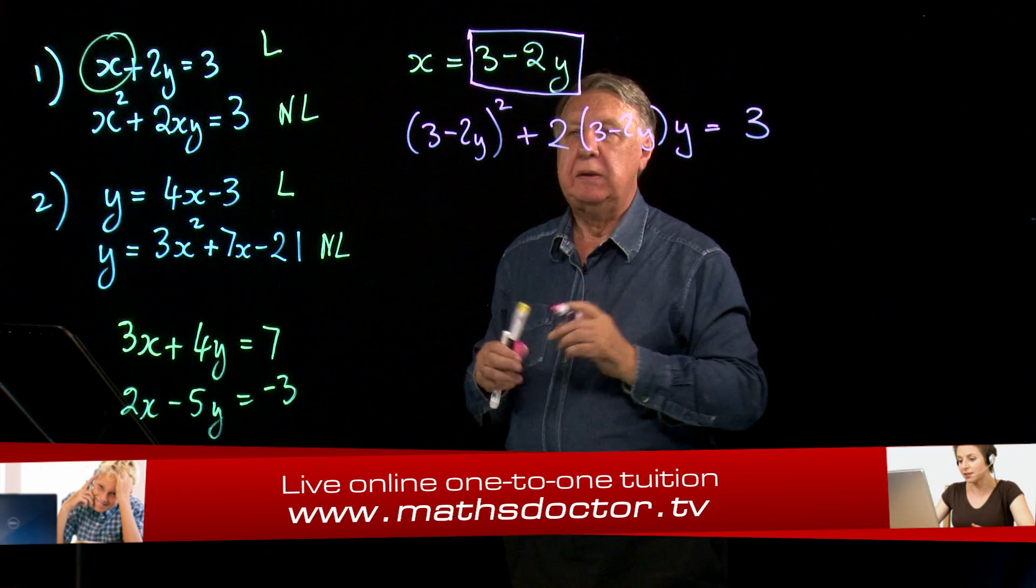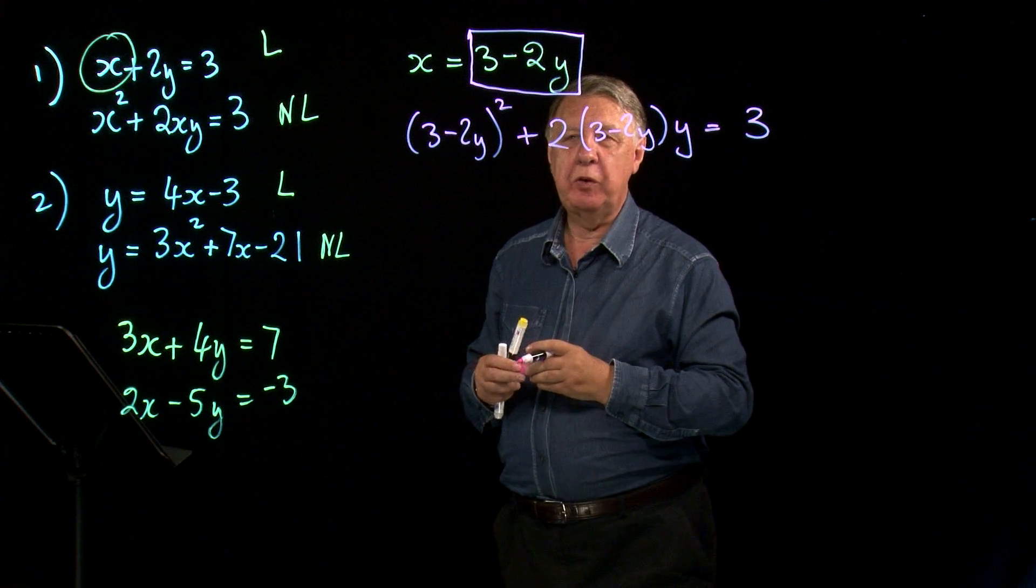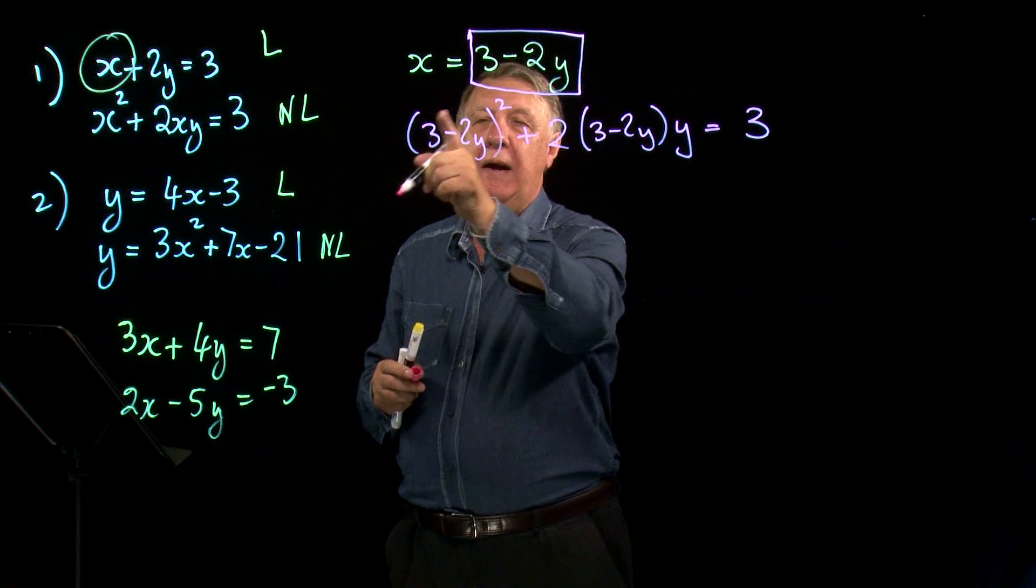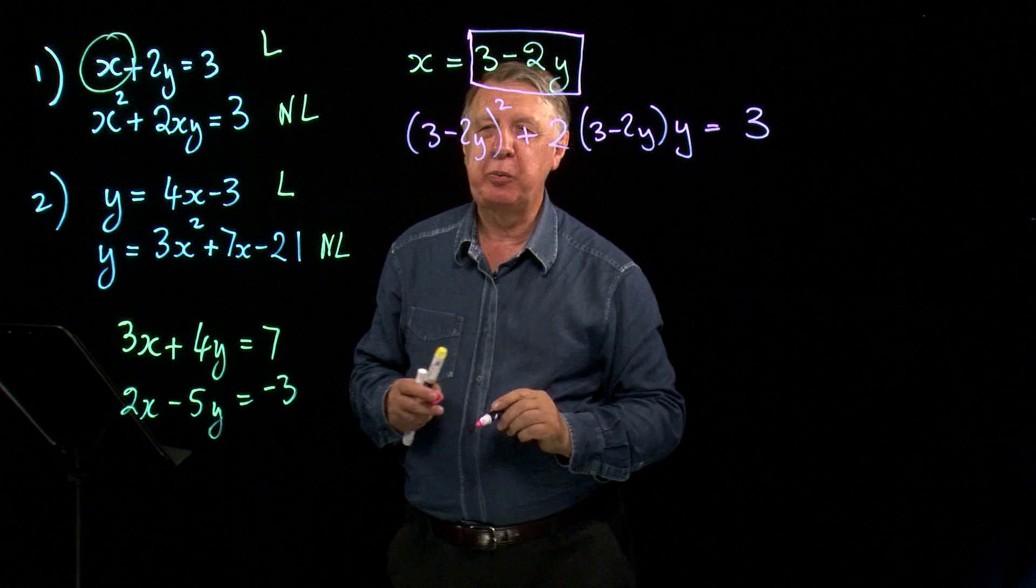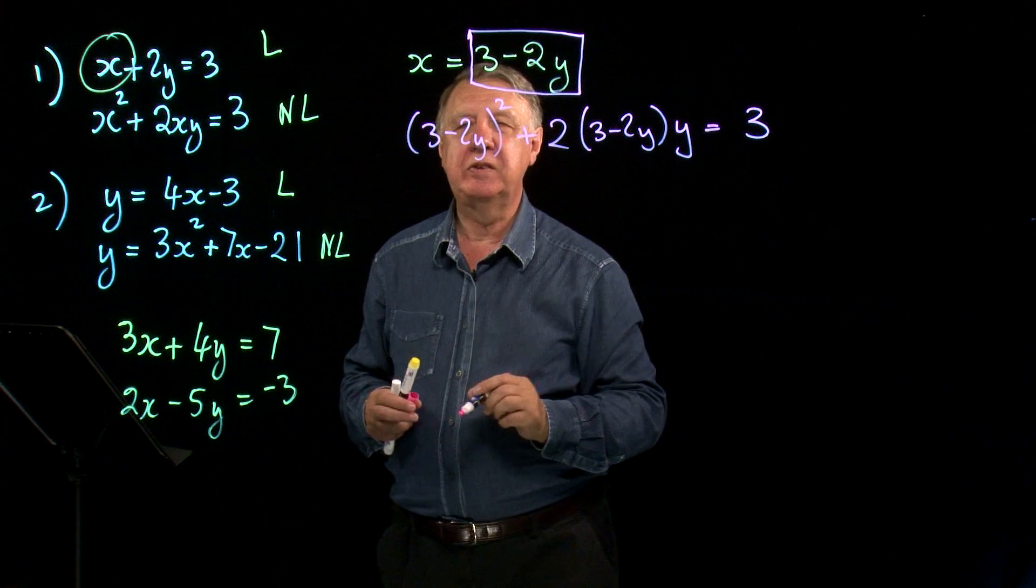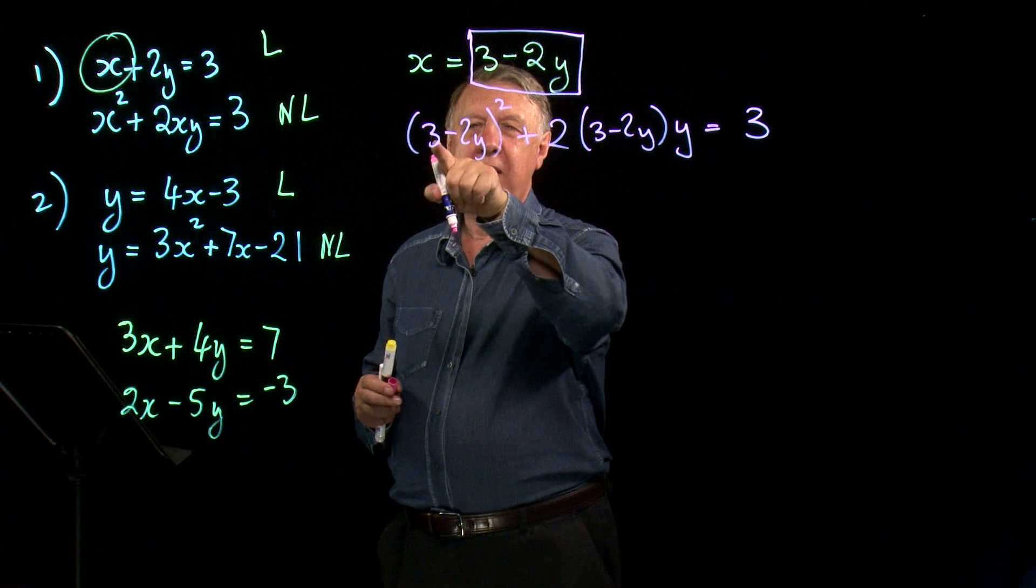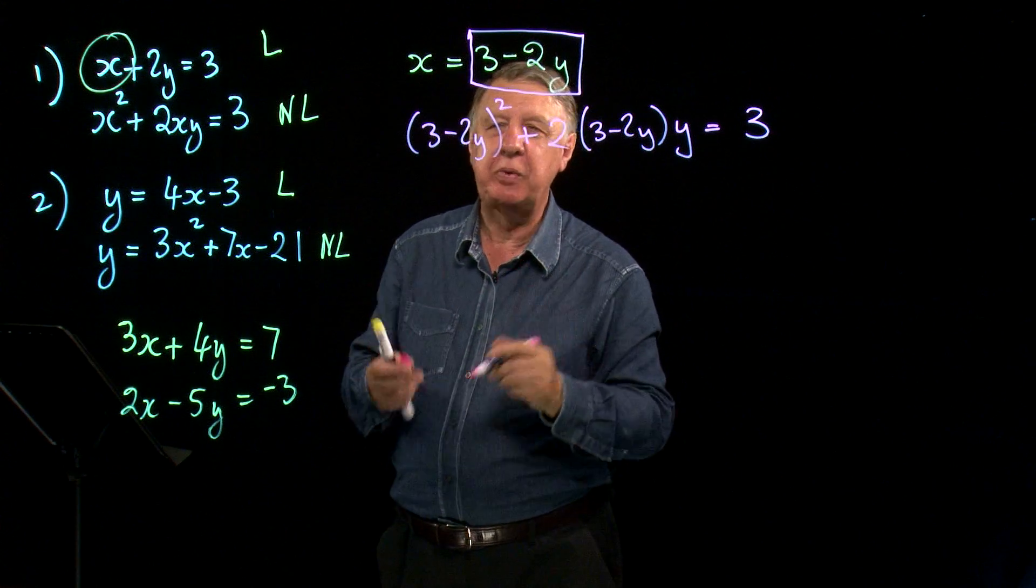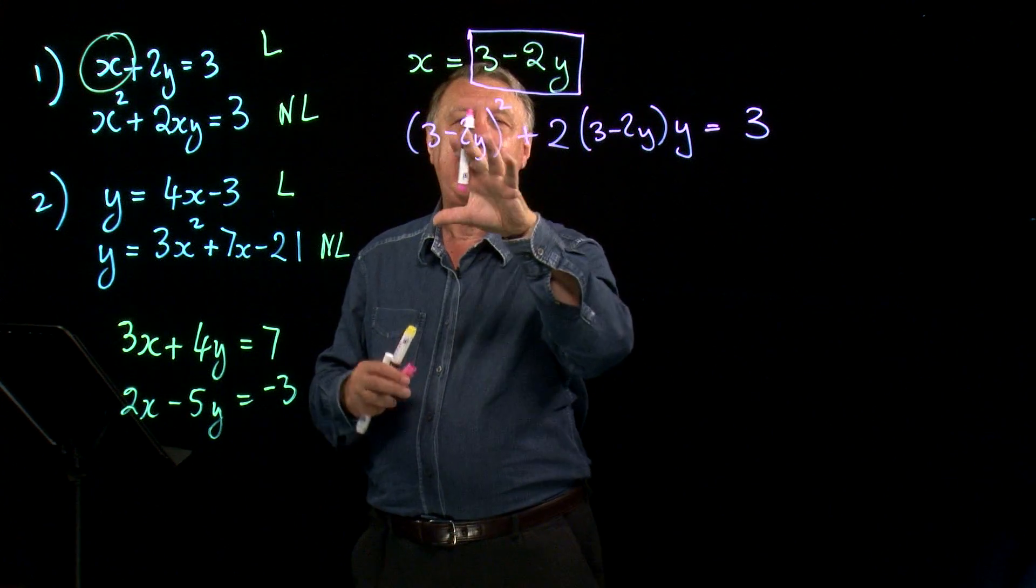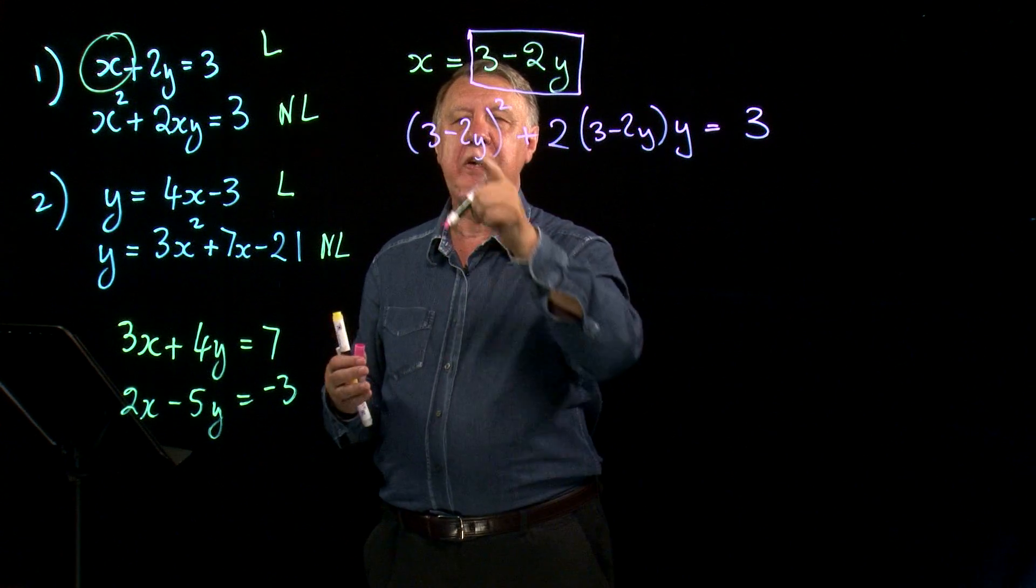Then this is the bit where you've got to be good with your manipulation of basic algebra and we have the inevitable problem here because you're going to have to square out this bracket. Please don't just say that's nine minus four y squared, would be the worst thing you could do. Try again. Let's develop some skills here.